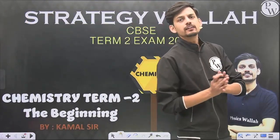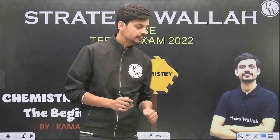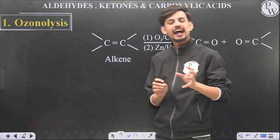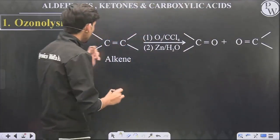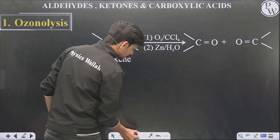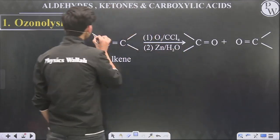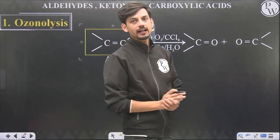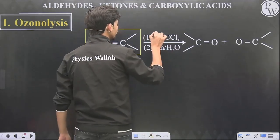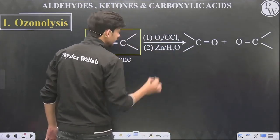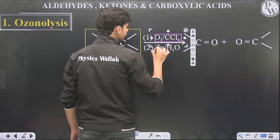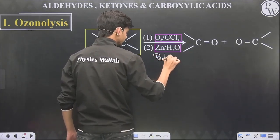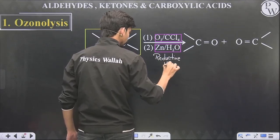Let's discuss how we can prepare these compounds. The common method of preparation of aldehydes and ketones involves the ozonolysis of alkenes. Alkenes are basically unsaturated hydrocarbons containing a double bond between carbon atoms. When these are ozonolyzed using ozone and CCl4, and in the second step hydrolyzed using zinc and water, this is known as reductive hydrolysis because of the presence of zinc.